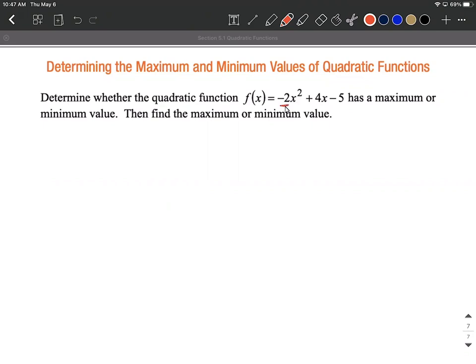What we want to do first is answer the question: does it open up or open down? Where we're going to look is ax² + bx + c. The a coefficient here is negative, which tells us this graph opens down.